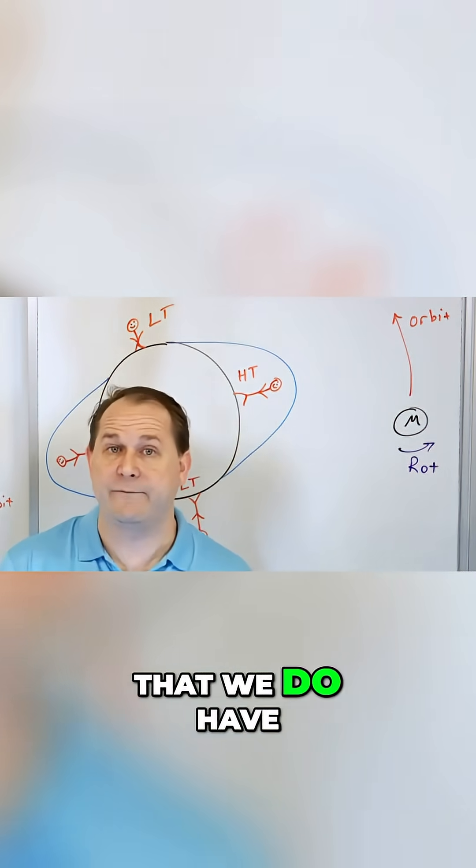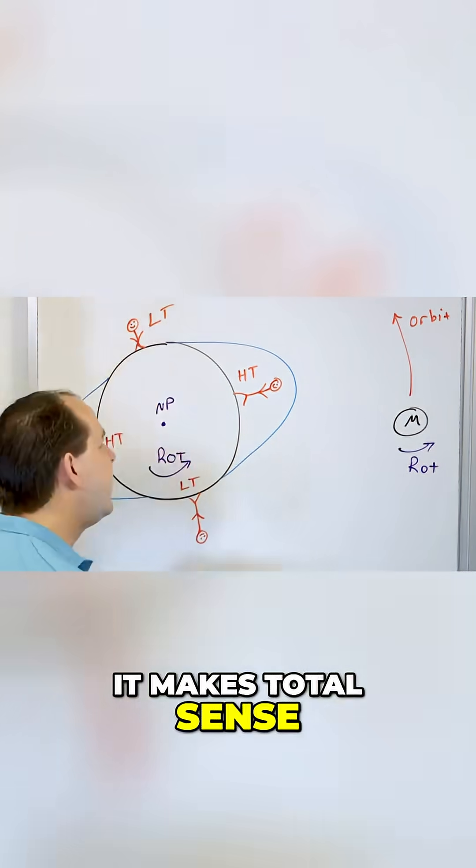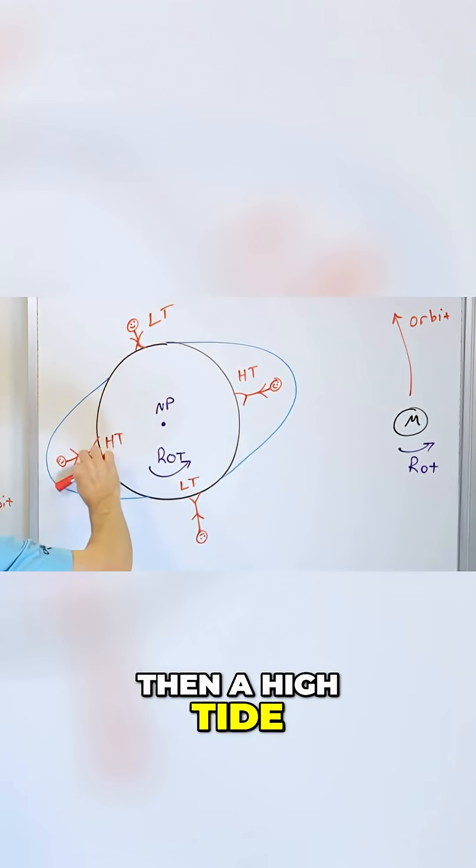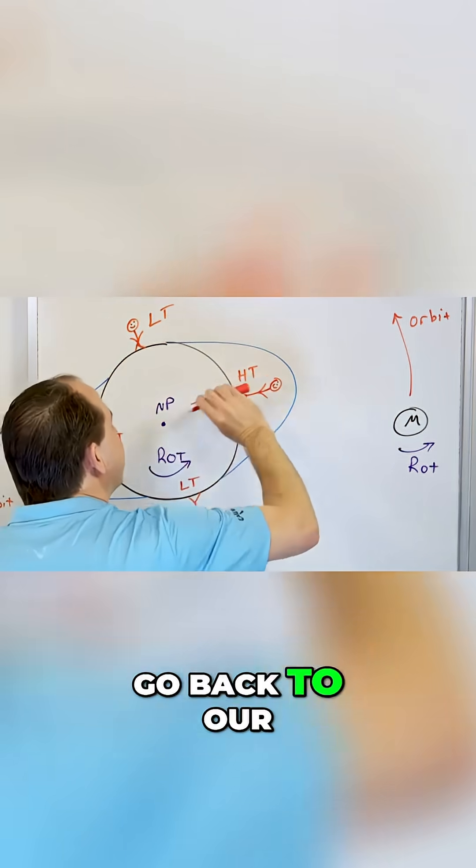Once you understand that we do have two bulges, it makes total sense that as the Earth rotates around, we're going to go through one high tide, then a low tide, then a high tide, then a low tide, and then we're going to go back to our starting position.